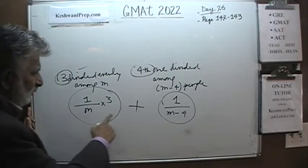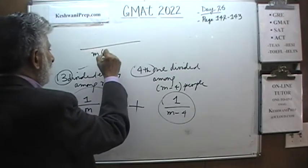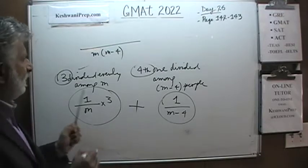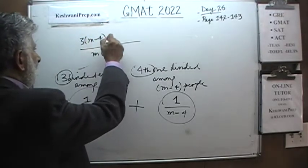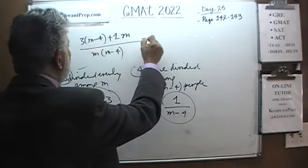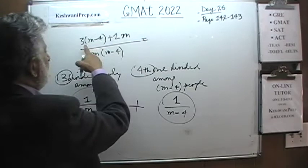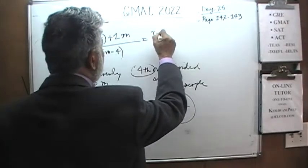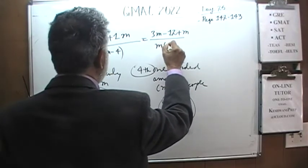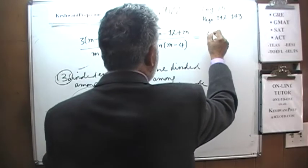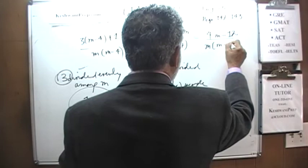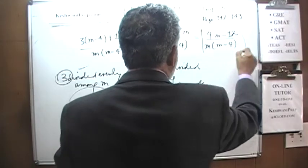The common denominator is M times (M-4). We multiply: 3 times (M-4) gives 3M minus 12, and 1 times M gives M. So the total is (3M minus 12 plus M) over M(M-4), which simplifies to (4M minus 12) over M(M-4). That's our answer — that's all they're looking for.